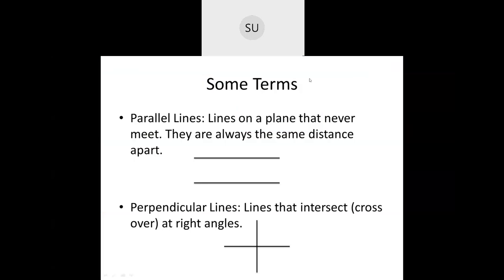Parallel lines — what are parallel lines? Lines on a plane that never meet are called parallel lines. They are always at the same distance apart. These two lines never meet and the distance between them is always the same. An example of parallel lines is railway tracks.